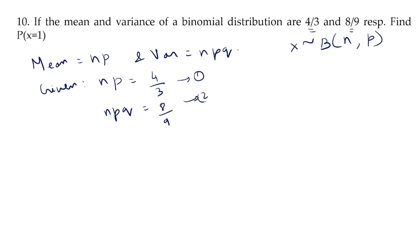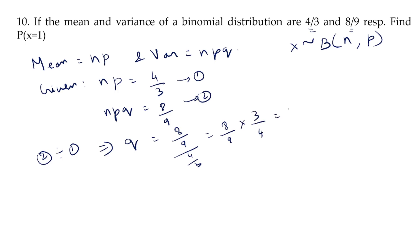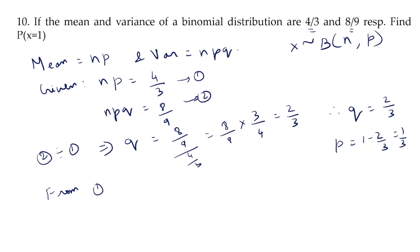Dividing the variance equation by the mean equation: q = (8/9) ÷ (4/3) = (8/9) × (3/4) = 2/3. Therefore q = 2/3, and p = 1 − q = 1 − 2/3 = 1/3. From np = 4/3, we get n = (4/3) ÷ (1/3) = 4.